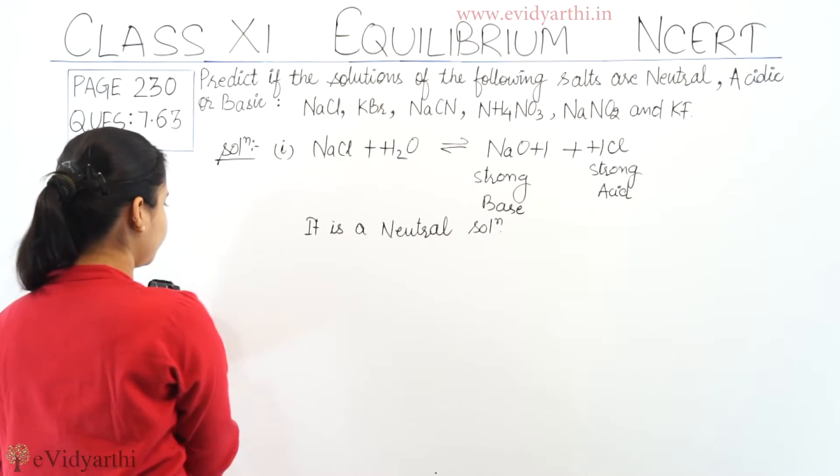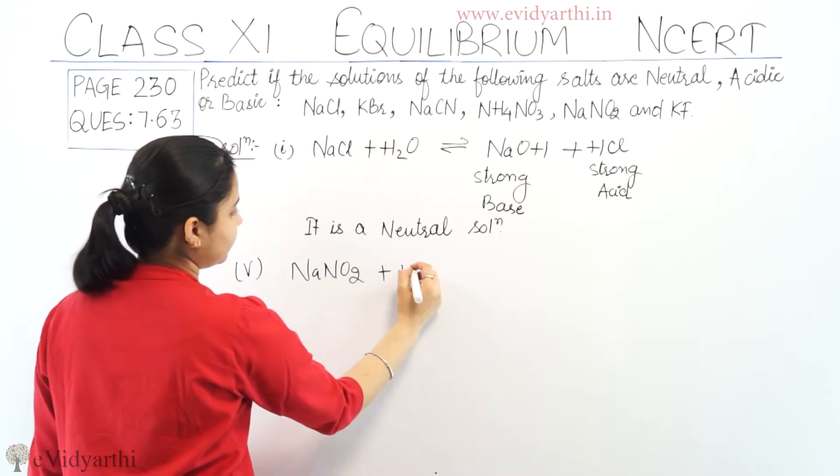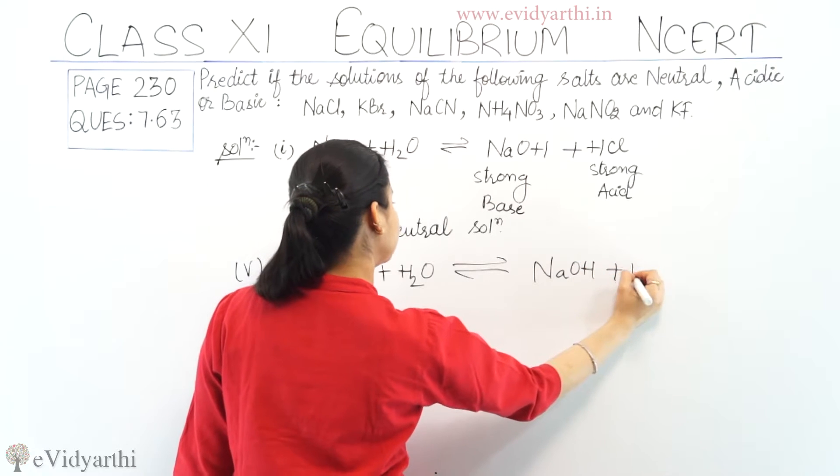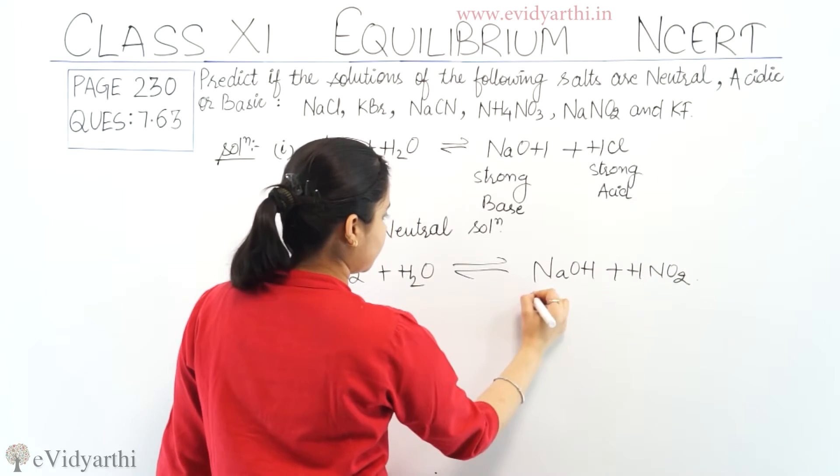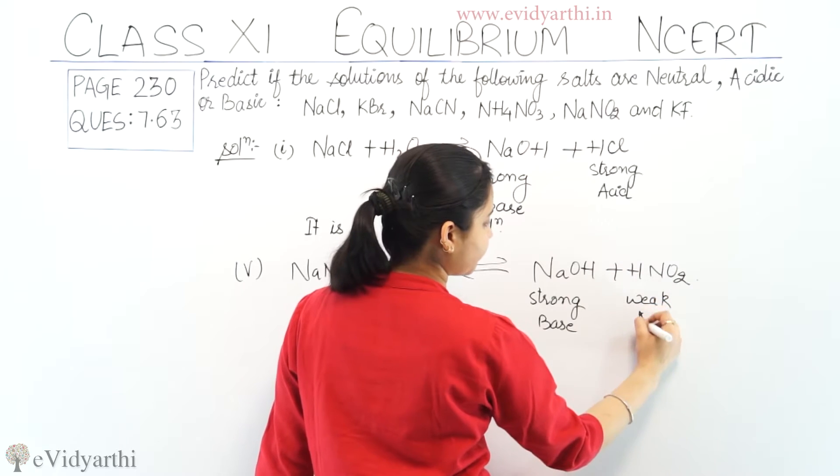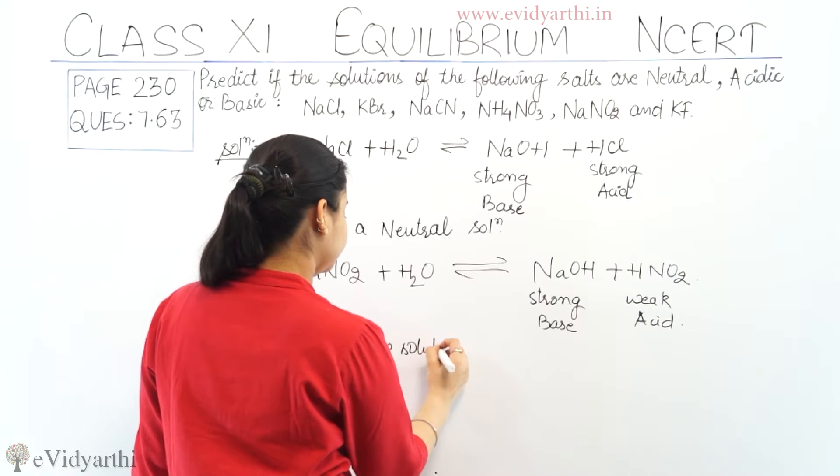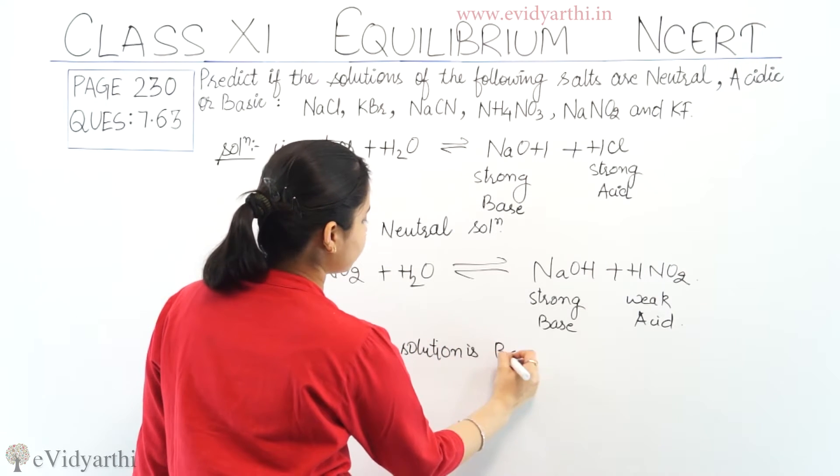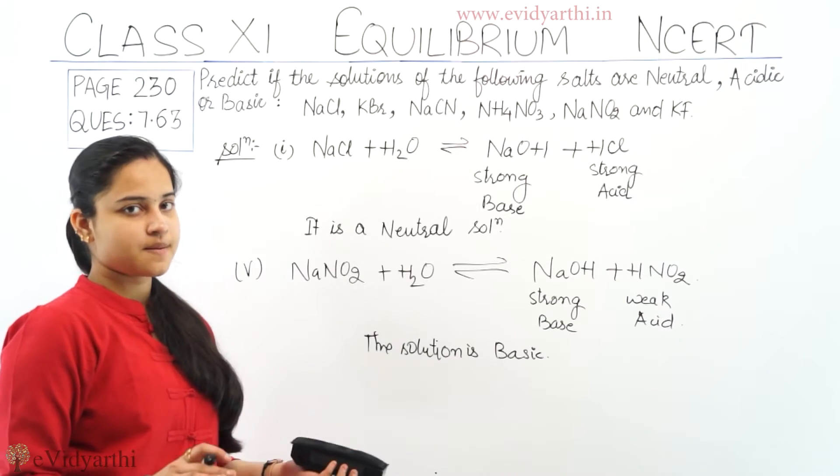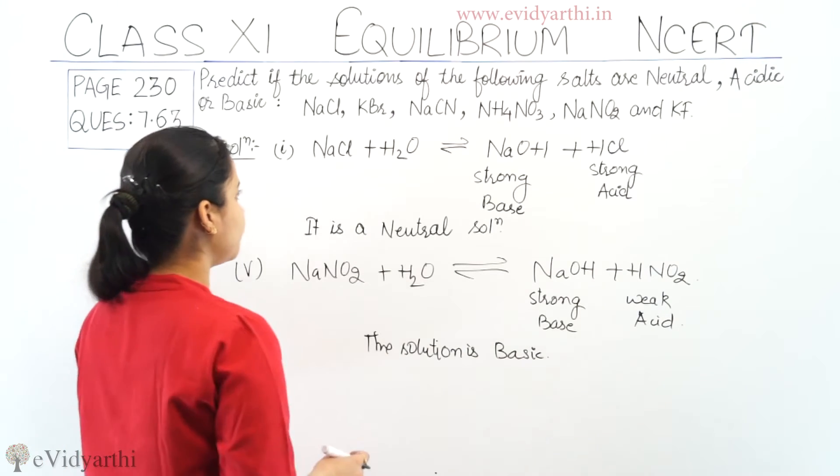Coming to the next part, NaNO2, sodium nitrite. I got NaOH, a strong base, plus HNO2 which is a weak acid. It is a strong base and it is a weak acid. So the solution of NaNO2 is basic. Why? Because in that solution a strong base is present. The weak acid's importance is negligible. As a whole, the solution would be basic. The solution is basic.